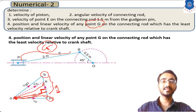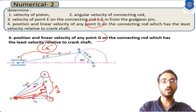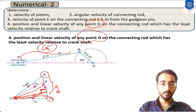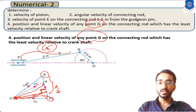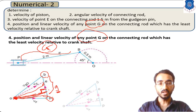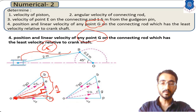To get the minimum velocity point G on the connecting rod, you sketch a perpendicular line from point O to the line PB on the velocity diagram. This perpendicular will lie on line PB and the foot of the perpendicular gives you point G.